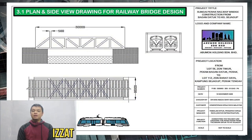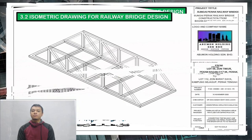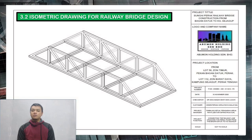I will explain the plan and side view drawing for railway bridge design. We chose a truss span design where the design has a length of 30,000mm and a width of 9,500mm, accommodating 2 train tracks at one time. The second drawing is an isometric drawing, used to calculate the cost and materials required, and to determine how many components are needed for the analysis.